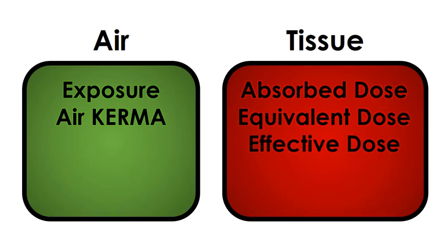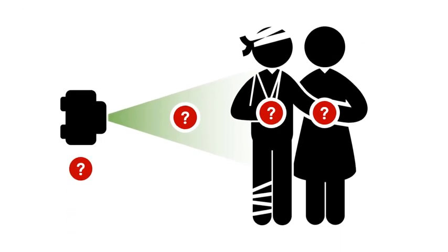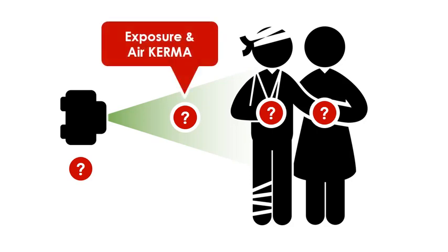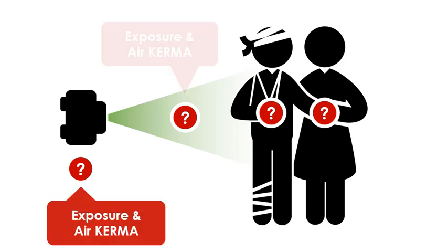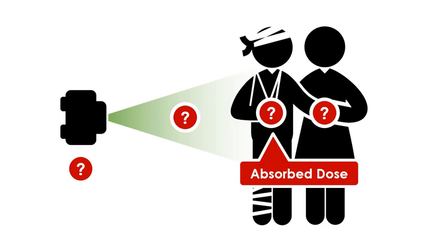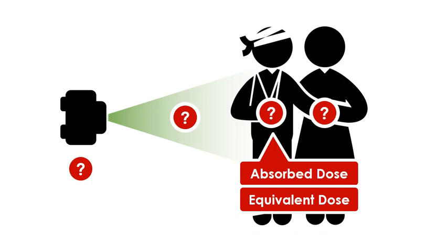All of these measurements are different but related. If we wanted to, we could measure each of these values during a single x-ray exposure. The intensity of the x-ray beam is usually measured as the exposure or the air kerma, which tells us how much radiation is coming out of the x-ray tube and is directed at the patient. We could also use the air kerma and exposure to measure the leakage radiation escaping the tube housing. The dose to the patient or the radiographer is first measured as the absorbed dose, which can then be calculated and converted into the equivalent dose, and the equivalent dose can be converted into the effective dose.